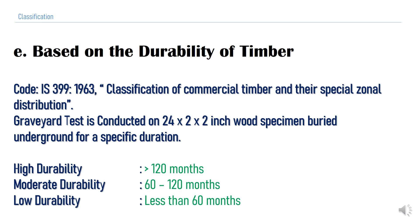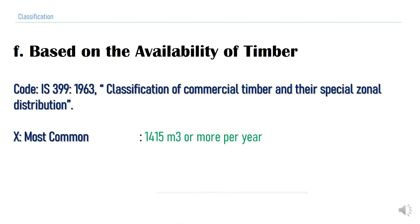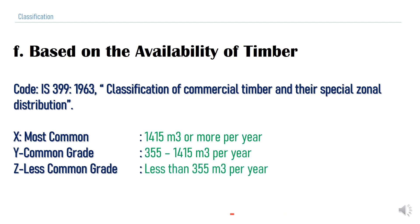The next classification is based on availability of timber, under the same code. Timber is classified as grade X (most common), yielding 1415 cubic meters or more per year; grade Y (common), yielding 355 to 1415 cubic meters per year; and grade Z (less common), yielding less than 355 cubic meters per year.